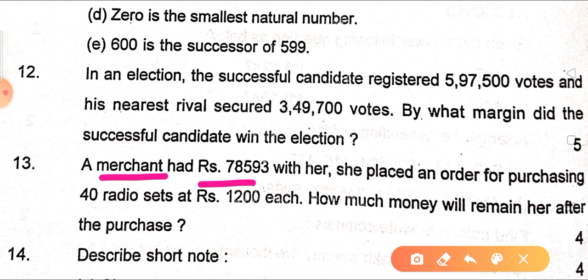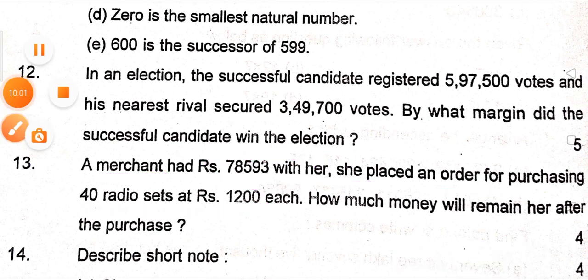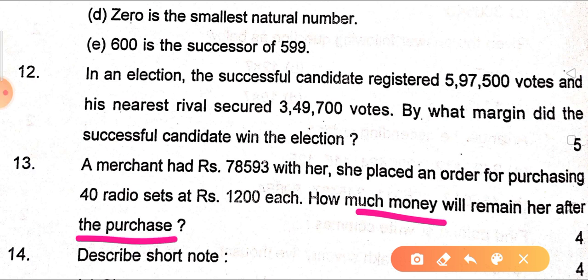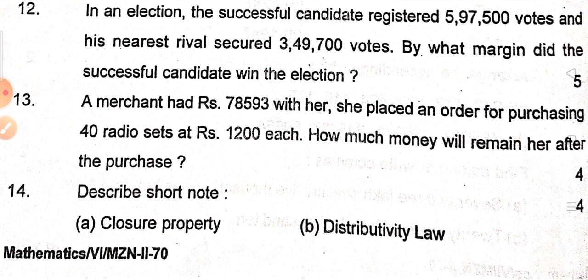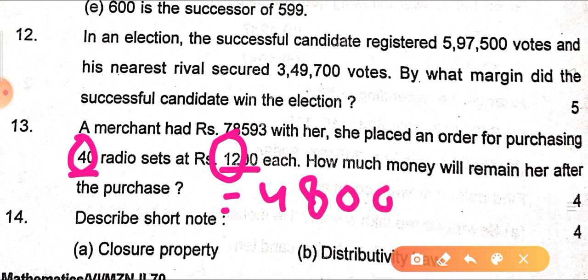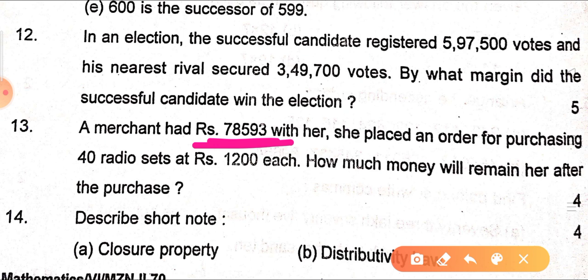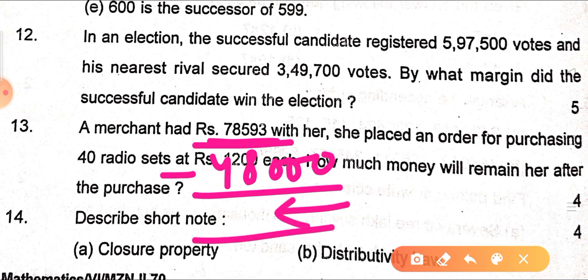Next: a merchant had ₹78,593 with her. She placed an order for purchasing 40 radio sets at ₹1,200 each. How much money will remain with her after the purchase? First find the total cost: 1,200 × 40 = 48,000. Then subtract from her total money: 78,593 − 48,000. Calculate the answer and write it in the comments section.